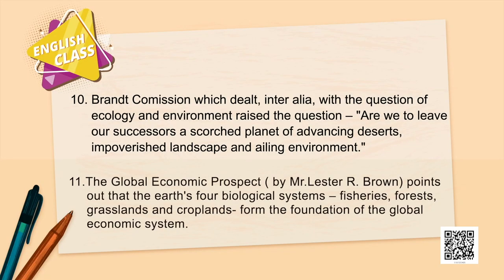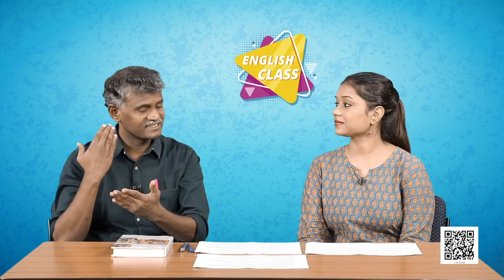The Global Economic Prospect by Lester R. Brown points out that the Earth's four biological systems — fisheries, forests, grasslands, and croplands — form the foundation of the global economic system. Fisheries are water-related, forests provide wood and resources, grasslands provide oxygen and more, and croplands give us vegetables, rice, wheat, and so on. These four major aspects form the foundation of all economic activities — and unfortunately, all four are being exploited.